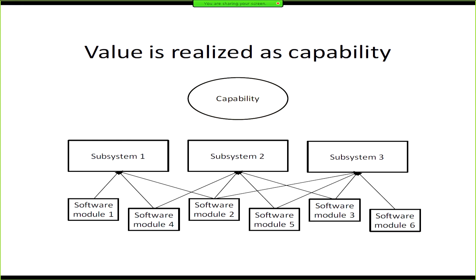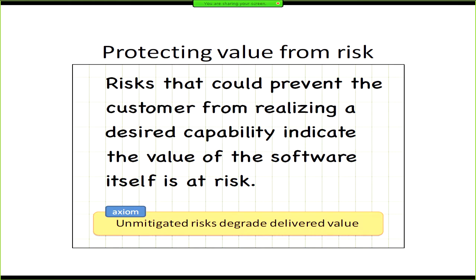Ultimately, the software quality plan takes as an input the most valuable aspects of the software to your customer and prescribes activities to ensure that those most valuable areas have quality applied. Here we have a basic capability, subsystem, module breakdown. The things that are valuable to your customer are typically reflected here. In order to have that as an input for our software quality plan, one of the basic ways you can do that is through a basic risk assessment.